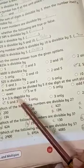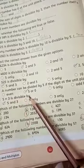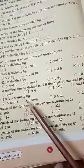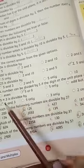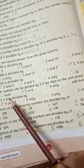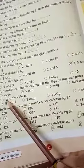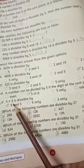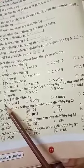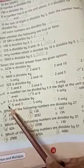5 times 3 is divisible by 5 and 3, 5 only, 3 only, 2 only. 5 multiply 3 is equal to 15 and 15 will be divisible by 5 and 3, alright? So, tick the option, option A.